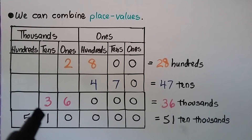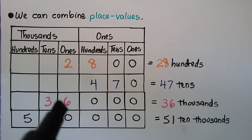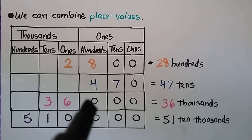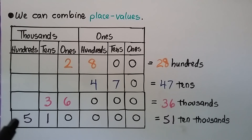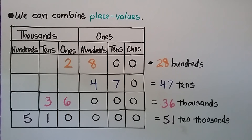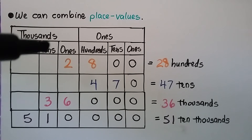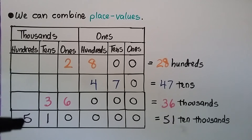Look at this number: we have three in the ten thousands place, six in the one thousands place, and zeros in the hundreds, tens, and ones. That's thirty-six thousands. But what happens when we go one more place value? Now we have a five in the hundred thousands place, a one in the ten thousands, and all the other place values are zero. We can look at this as fifty-one ten thousands.